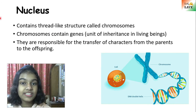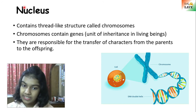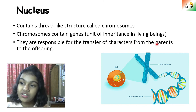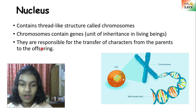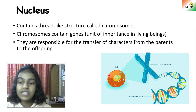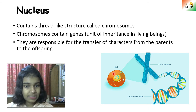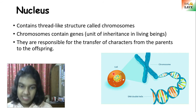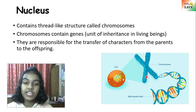So the nucleus has two key importances: first, it is the control center of the cell, controlling every activity happening in the cell; and second, it contains chromosomes which contain genes responsible for the transfer of characteristics from parents to offspring. The entire content inside a cell — cytoplasm plus nucleus — is known as the protoplasm.